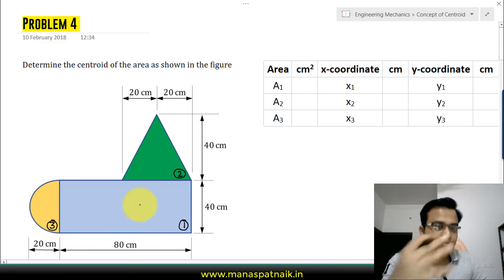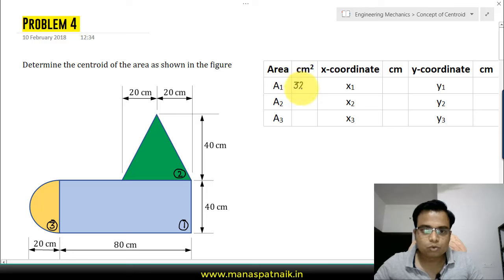Initially we'll be calculating their areas individually. Let's start with the rectangle, so its area will be 80 multiplied by 40, which is 3200. Secondly, you have this triangle over here, and you know very well the triangle's area is given by half of base into height.